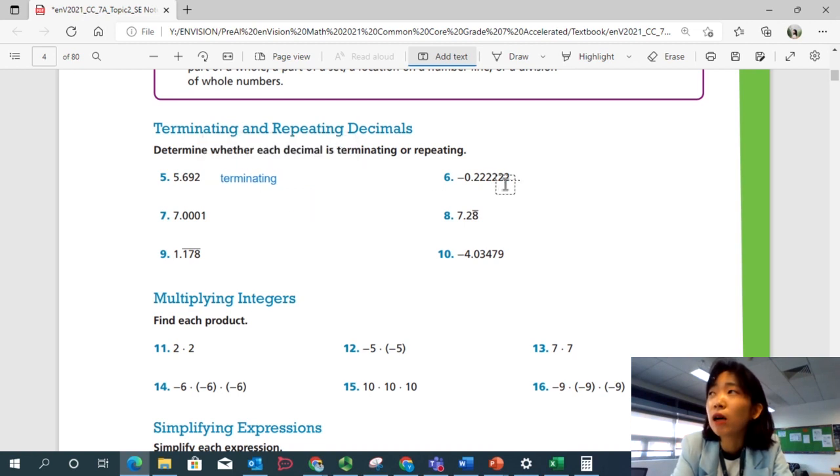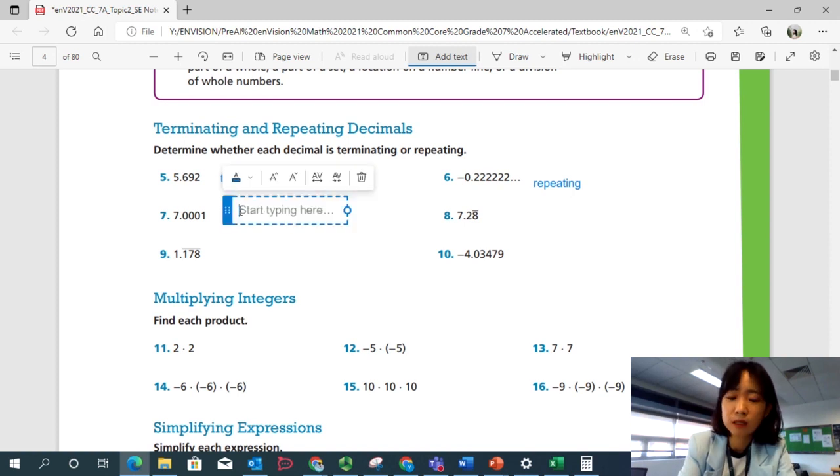Number 6. The two repeats. Negative 0.22222 dot dot dot, right? So that's a repeating decimal. Number 7. 7.0001. It's a terminating decimal.